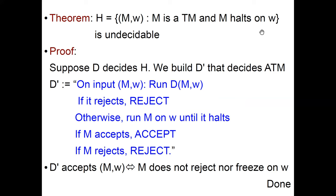So how are we going to prove that? We're going to assume towards a contradiction that some decider D decides H. Given that, we're going to build another decider D' that decides ATM. Here is how D' is defined: on input M and W, you run D on M and W. Remember, D is what you supposed decides H. If D rejects, D' also rejects. Otherwise, now we know that M on W stops, so we can run M on W until it halts.